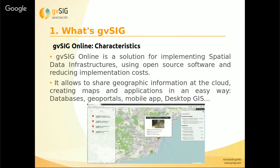The last product of GBC is GBC Online, which is a solution for implementing spatial data infrastructures and allows reducing implementation costs. With GBC Online we can share geographic information in the cloud. For example, we can create geo portals — from a main geo portal we can create several smaller ones, like a geo portal for tourism, another for health. It also includes a mobile application where users can report an incident on the street.